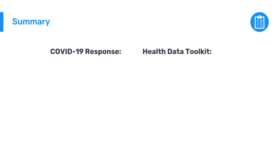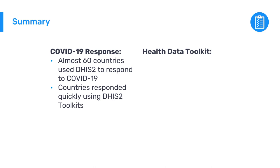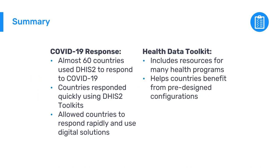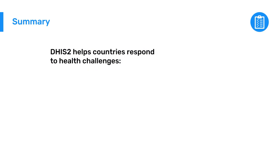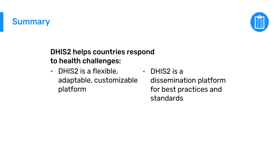In summary, we've seen how almost 60 countries around the world use DHIS-2 to respond to the COVID-19 pandemic, including using aggregate data for disease surveillance and tracker data for immunization programs. Countries were able to respond quickly by using DHIS-2 COVID-19 toolkits, including installable metadata packages, which allowed them to rapidly implement digital solutions based on international standards to respond locally to these public health challenges. These resources are part of the DHIS-2 Health Data Toolkit, which includes resources for many health programs. Using the toolkit helps countries benefit from pre-designed configurations that can be further customized and tailored to specific country needs, including changing needs over time. This shows how countries benefit both from DHIS-2 being a flexible, customizable platform and from its use as a dissemination platform for global standards.